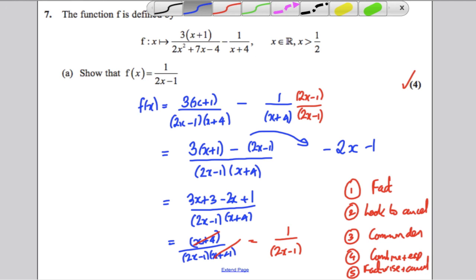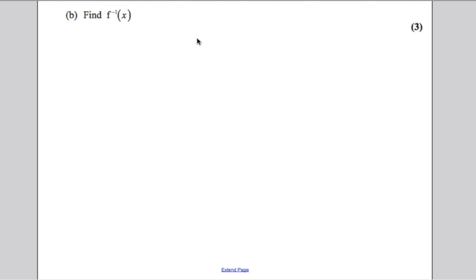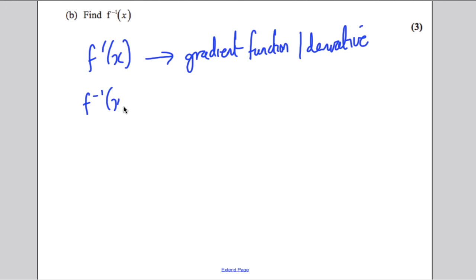Let's go on to part B now. Find f⁻¹(x). Now, very important note here. Many students go off and differentiate and find f'(x). f'(x) is the gradient function, or another word for it is the derivative. f⁻¹(x) is the inverse function. And you must know the difference between these two.